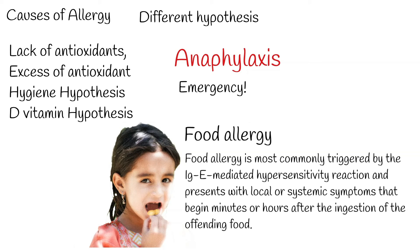Serum IgE concentration is largely age-dependent. At very low levels at birth, it increases with age up to the teenage years, after which it starts slowly decreasing. Total serum IgE then declines from the second through the eighth decades of life.